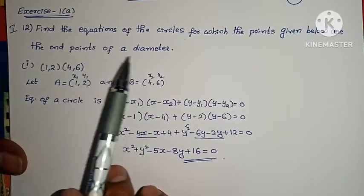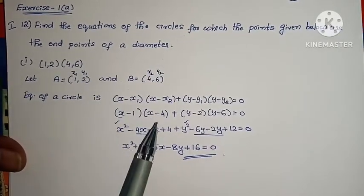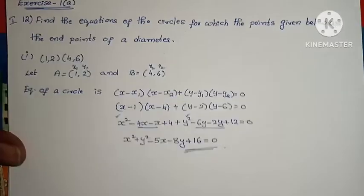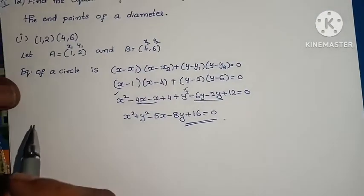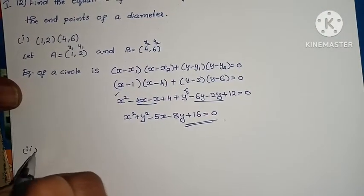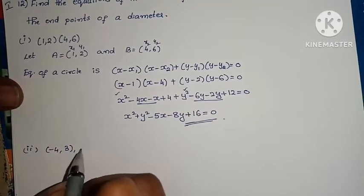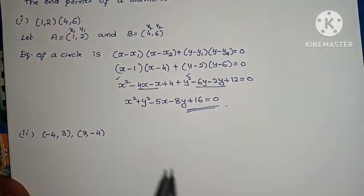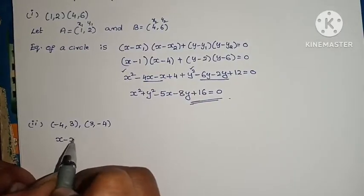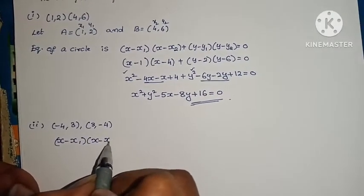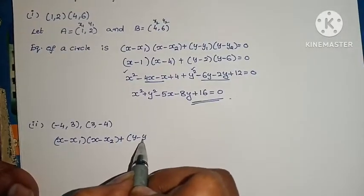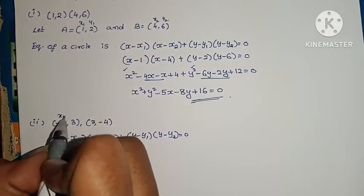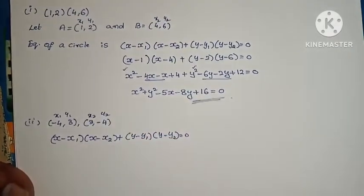For the second problem, the endpoints are (-4, 3) and (3, -4). The same steps apply. Using the formula x minus x1 into x minus x2, plus y minus y1 into y minus y2, equals 0, where x1, y1 is (-4, 3) and x2, y2 is (3, -4).